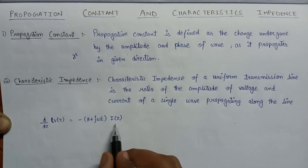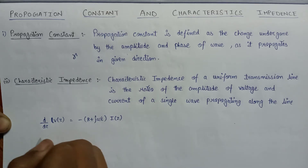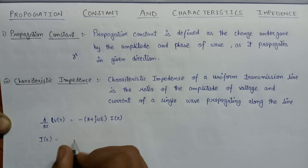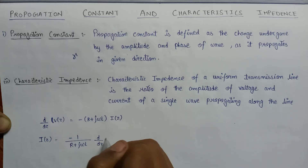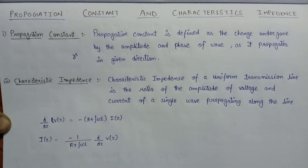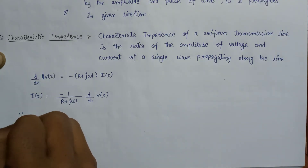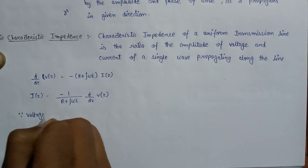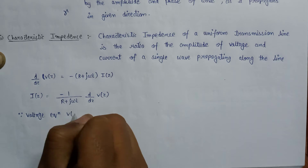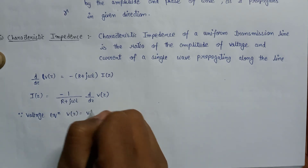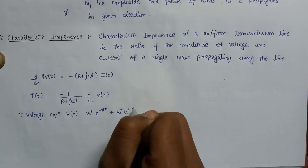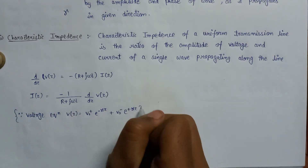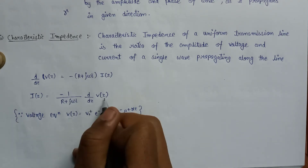So, if we want to find the value of I(z), then I(z) equals minus one over (R + jωL) times d/dz of V(z). Since in the voltage equation we derived, V(z) equals V₀⁺ e^(−γz) plus V₀⁻ e^(+γz). So this is the voltage equation, and we substitute V(z) into the above expression.